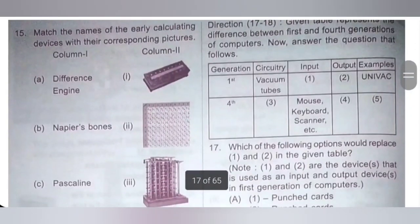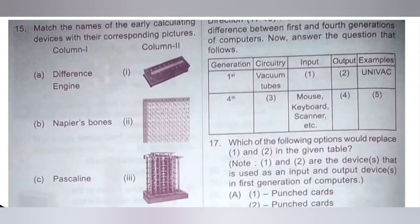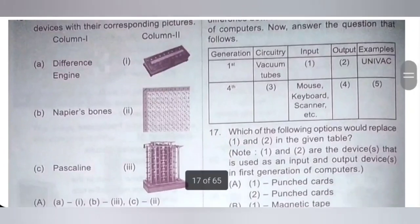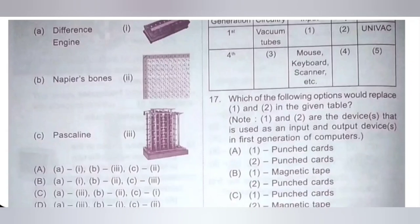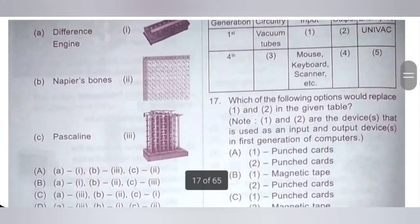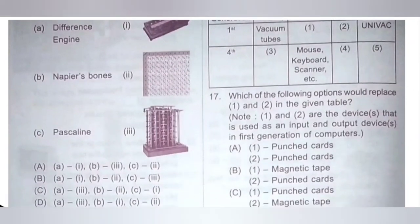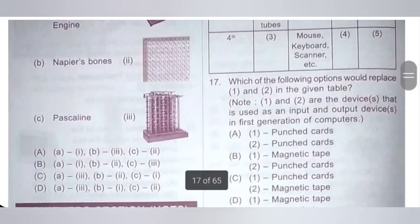15th question: Match the names of the early calculating devices with their corresponding pictures. Difference engine — A3. Napier's bone — B2. Pascaline — C1. Option C is the correct answer.